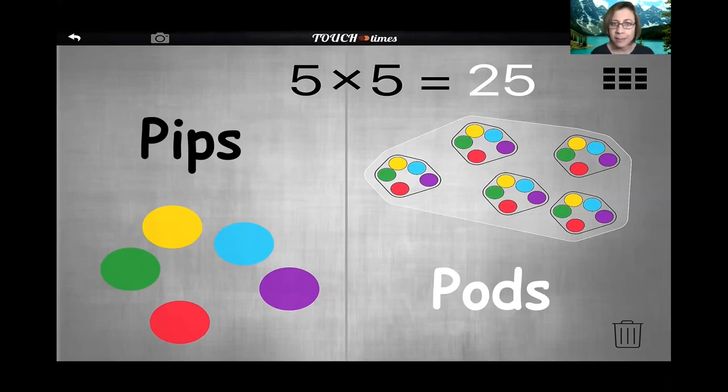Touch Times takes care of the multiplying, both in terms of making sure that the pods are reflective of the number of pips, and in terms of ensuring that the equation at the top of the screen corresponds to the pips and pods that have been created by the user.